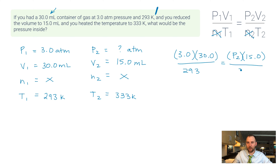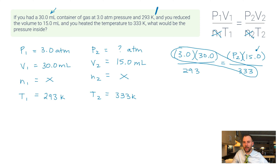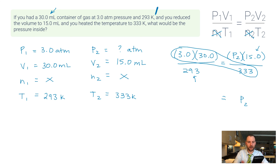The right side has p2 as the unknown, 15.0 mL, and 333 K. I'll cross-multiply and solve for p2 by typing into my calculator: 3 × 30 × 333 ÷ 293 ÷ 15. That gives 6.81911... We only want two significant figures because of the 3.0, so the answer is 6.8 atmospheres.